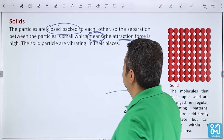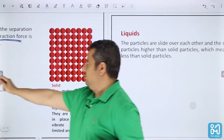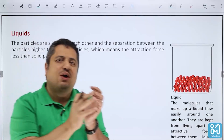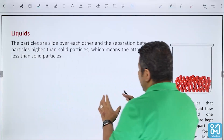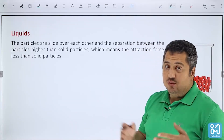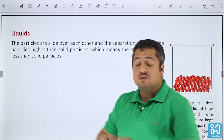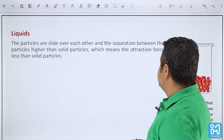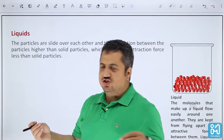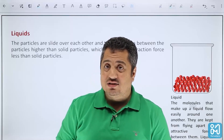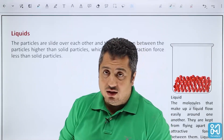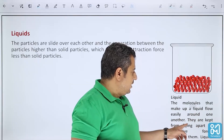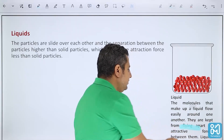For liquids, the particles are not as close to each other as in solids — it's not as crowded. The particles will slide over each other because the attraction force is high but not as much as in the solid, so there is a little freedom to move. The separation of the particles is higher, and so the attraction is less than in a solid. But there is still an attraction force, so the particles will not fly away — they keep the same volume, and the liquid flows easily around itself.